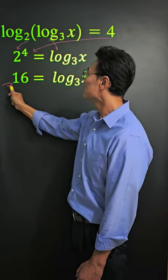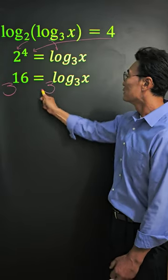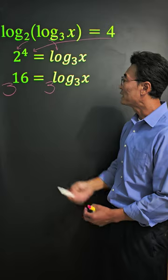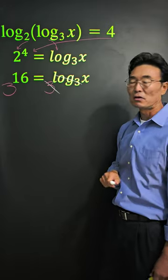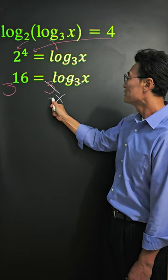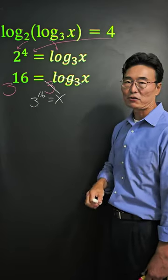The reason for that is when we have 3 to the log of 3, we're able to cancel out the 3 and the log 3, leaving us with x and 3 to the 16th power.